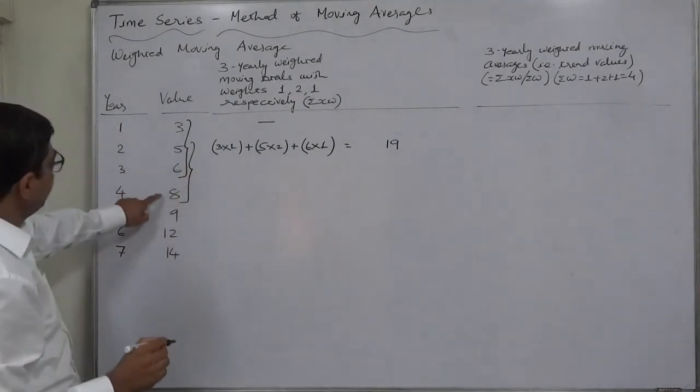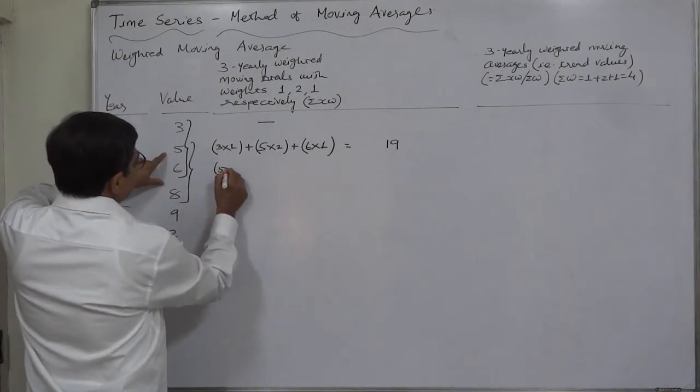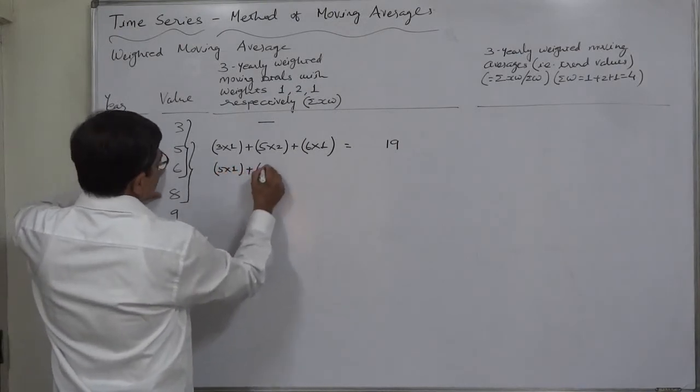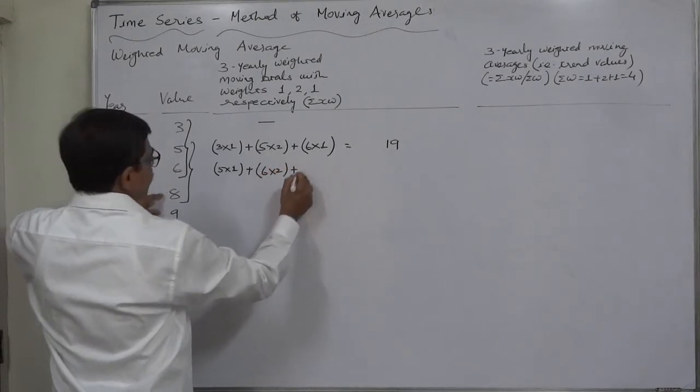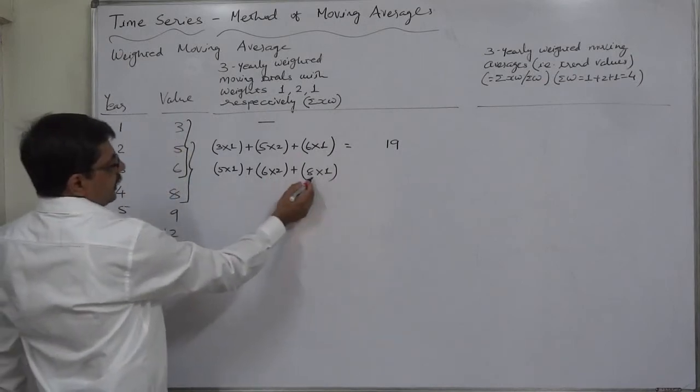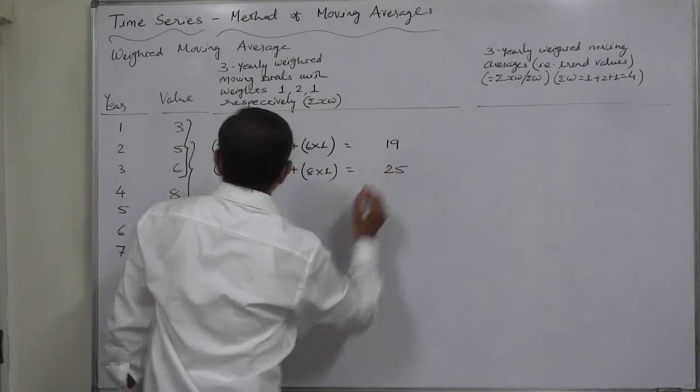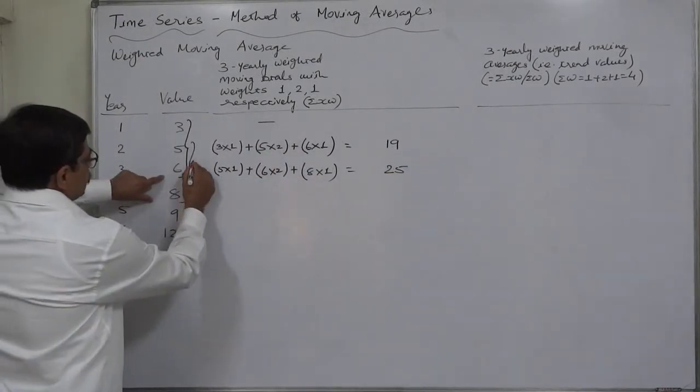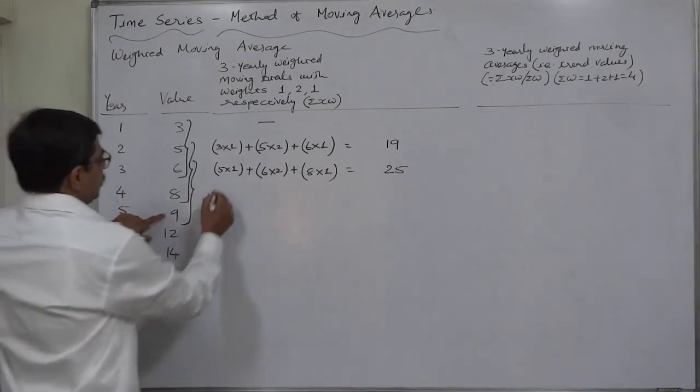Similarly, now the second total will be of second, third, and fourth value, in which 5 is first so it is multiplied by 1. Second is 6, it will be multiplied by 2, and third is 8, it will be multiplied by 1. 6 into 2 is 12, 12 plus 8 is 20, plus 5 is 25.